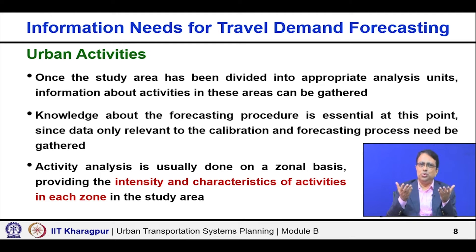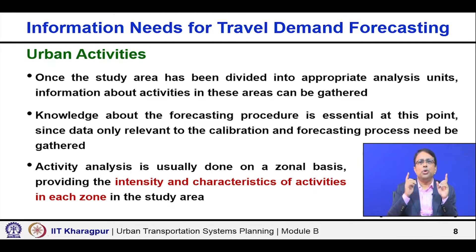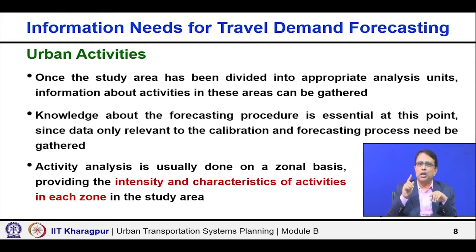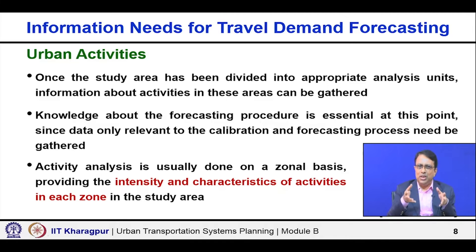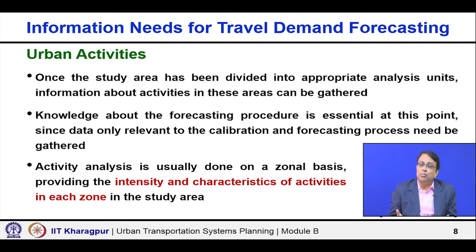Activity analysis is usually done on a zonal basis, providing the intensity and characteristics of activities. Intensity means the quantity — how many households, how many housing units — but the characteristics are also important: whether it is low income, medium income, or high income. If it is an employment zone, what kind of employment is present. Both intensity and characteristics are important.